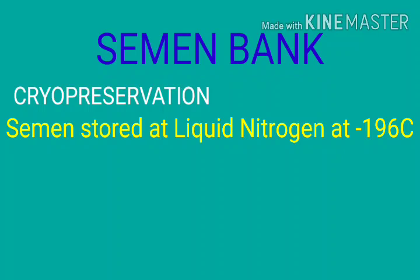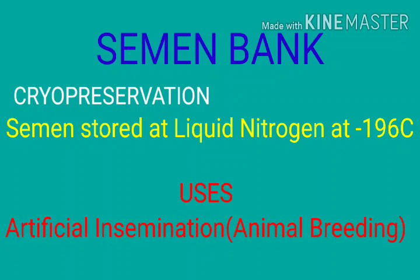Similarly, the superior semen of male animals is collected and stored in liquid nitrogen at minus 196 degrees Celsius. This is also called cryopreservation, and such stored semen is called a semen bank. It is used for artificial insemination in animal breeding programs.